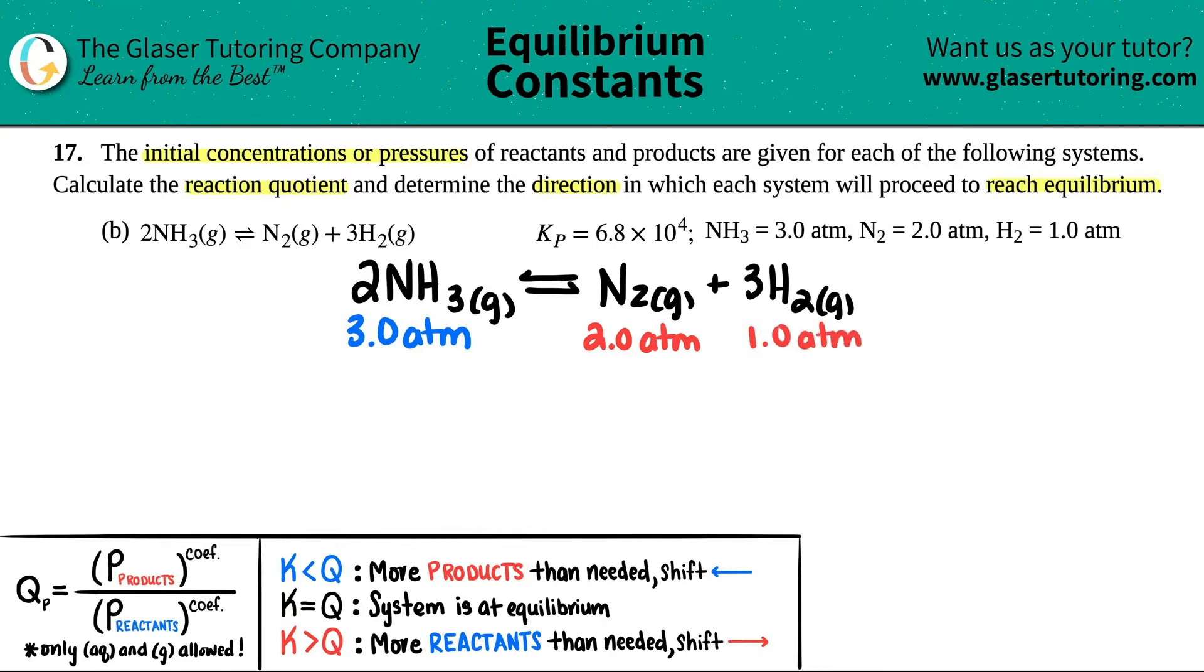Now we're ready to calculate the reaction quotient. Remember, the reaction quotient is the Q value. Now Qc versus Qp, it just has to match with what the K value they give you. The K value that they gave you was Kp. P stands for pressure, and all of these units of atm are pressure units, so we're going to be working with Qp.